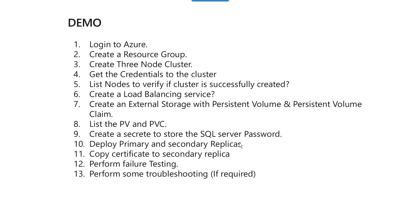Once the replicas are deployed, we will execute a SQL command on the primary replica which will create a certificate on the primary replica. Then we will copy this certificate from the primary replica to our local host, and from local host to the two secondary replicas. Once SQL Server is ready, we will check whether the availability group is working fine - on the primary replica, whatever database we have created, the same database should be created in the secondary replicas. We will insert a couple of records on the primary replica and then check on the secondary replicas whether those records are updated there.